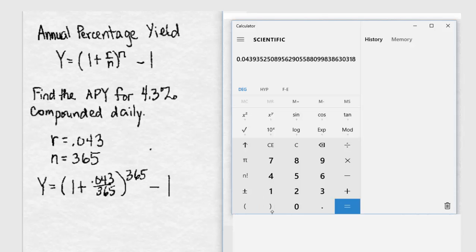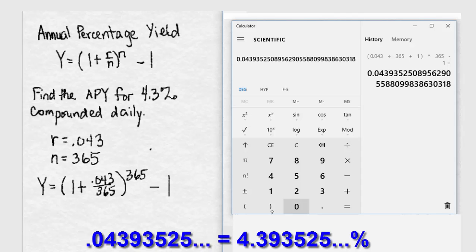Subtracting 1, then I can hit equals, and we have this very long decimal, 0.043935.